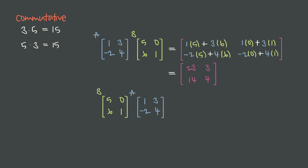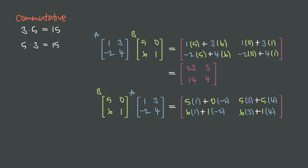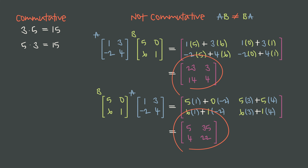But when we flip the order and multiply B by A, we still have valid multiplication since both are 2-by-2. However, when we do the math, multiplying rows in B by columns in A, we get the matrix 5, 35, 4, 22 — entirely different results. This proves that matrix multiplication is not commutative. Order does matter, and matrix AB is not necessarily equivalent to matrix BA. Sometimes they can be the same, but that's rare — we can never assume AB equals BA.